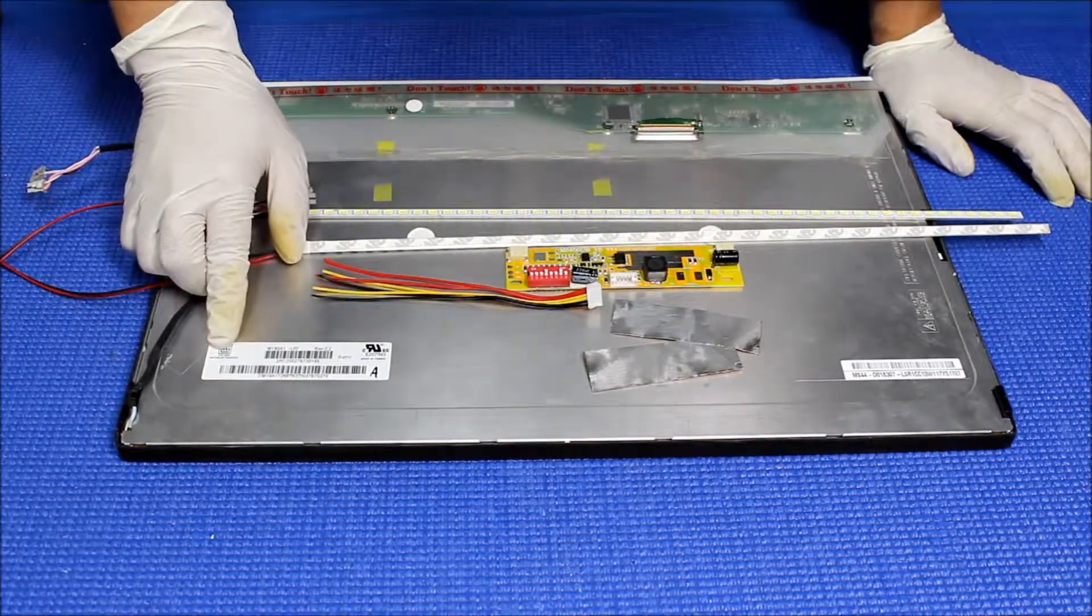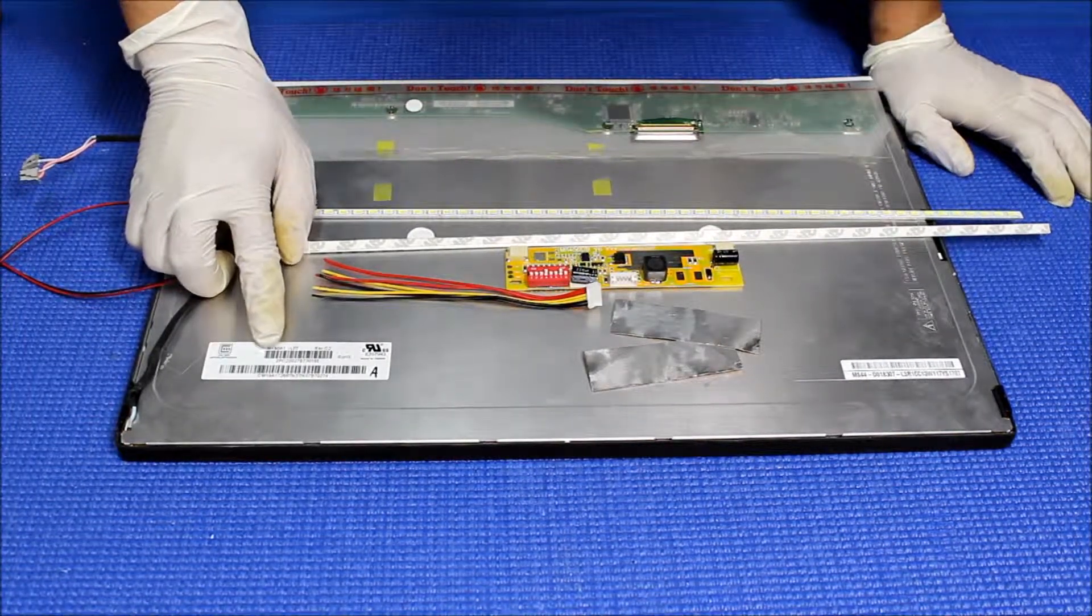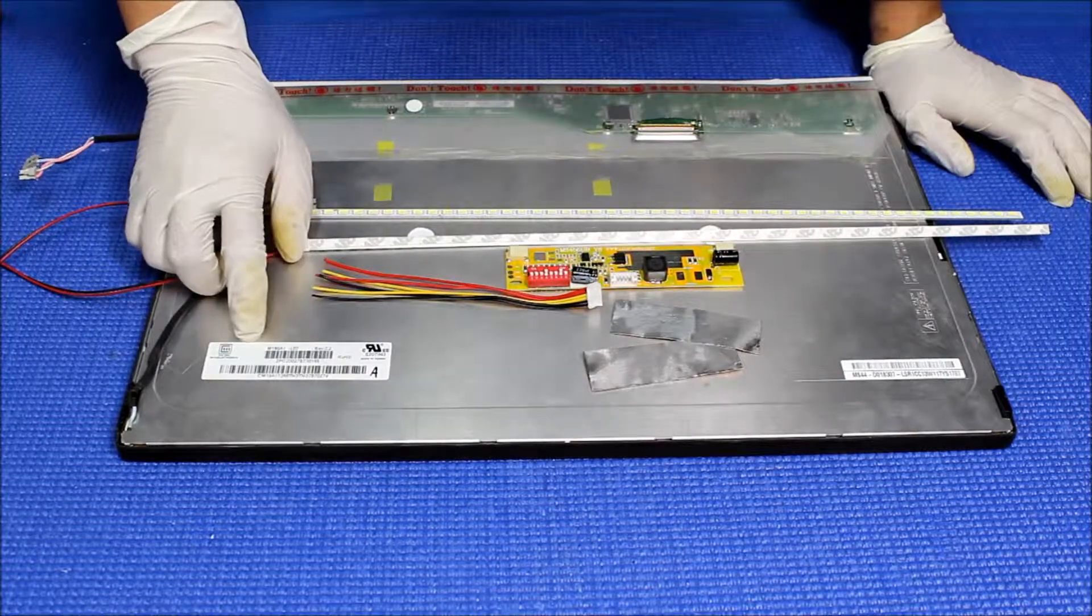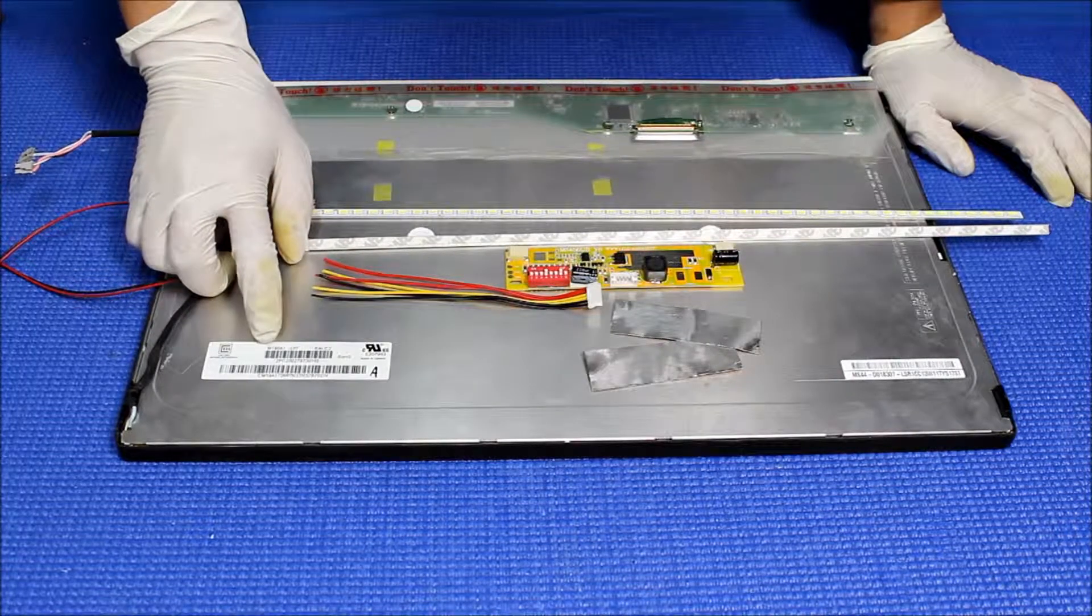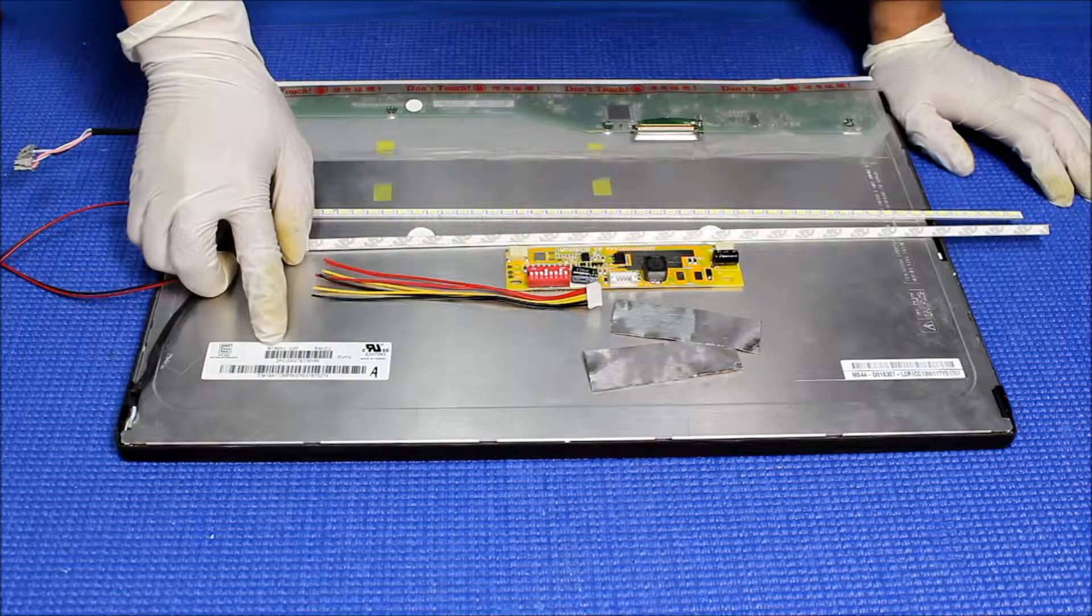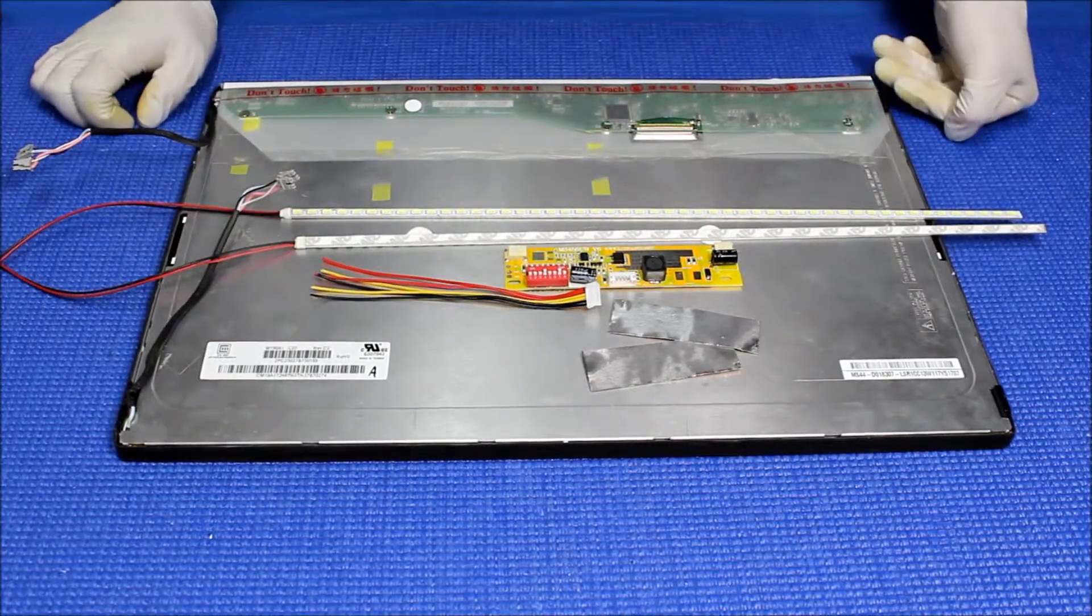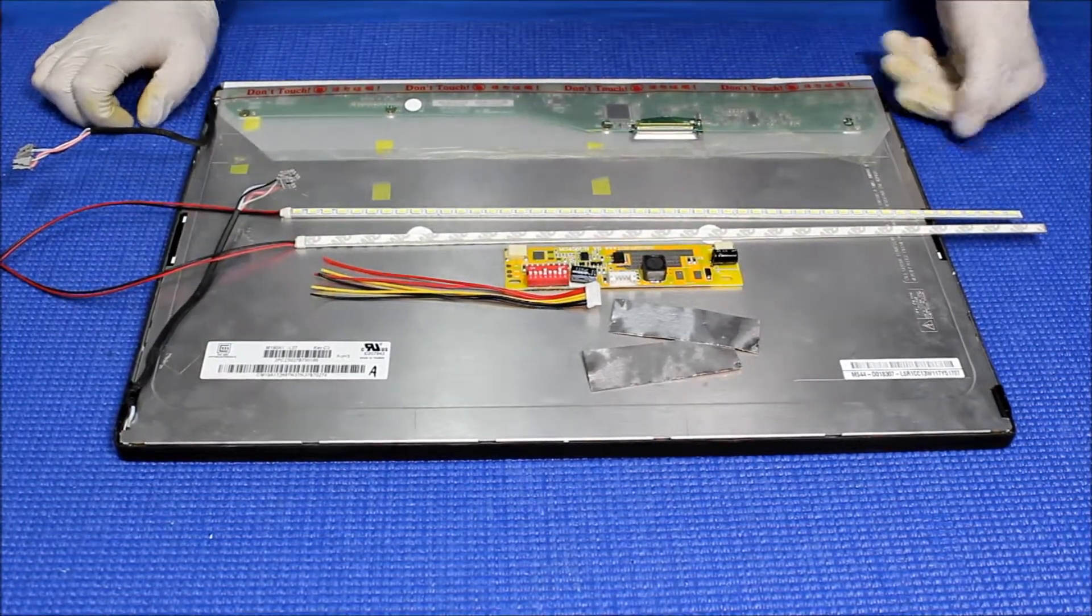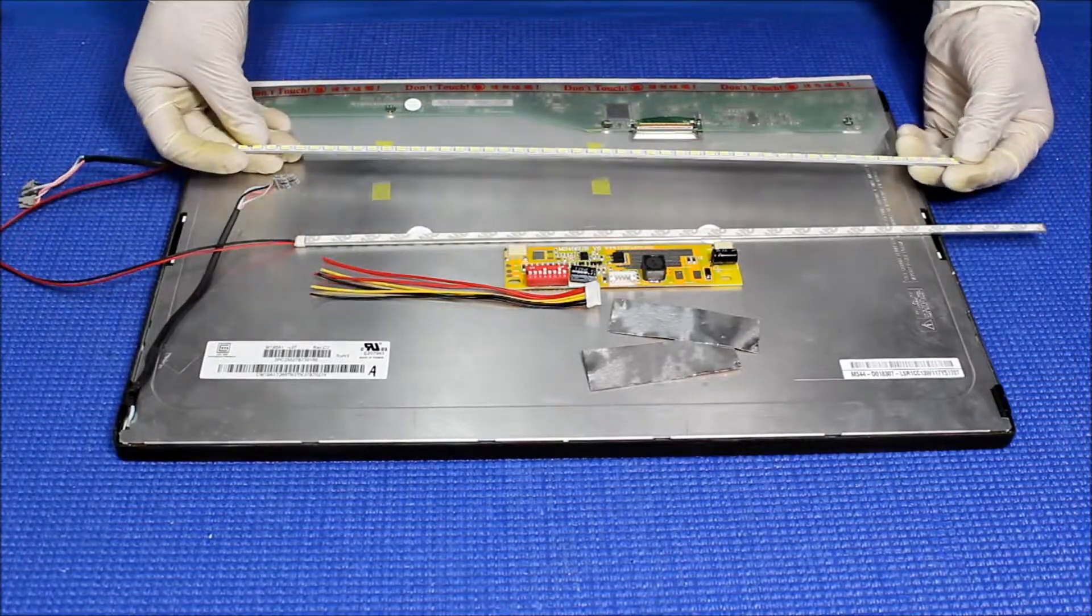This screen is made by Chi Mei. The part number is M190A1-L07. This is a 19-inch wide screen with a resolution of 1440 by 900, so that's why we have to use a UB60 series.